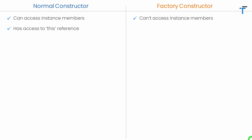In case of a normal constructor it is possible to access the this reference, but for a factory constructor we have no access to this reference. Basically, the this reference in a constructor is used for three different purposes: first, to access instance members (instance fields and instance methods); second, in a constructor's initializer list to initialize members inside the parameter list; and third, to call another constructor from within one constructor. In a factory constructor, none of these uses are available.